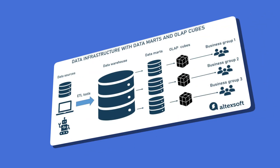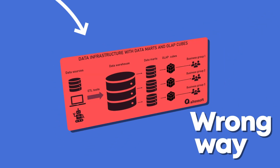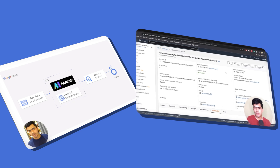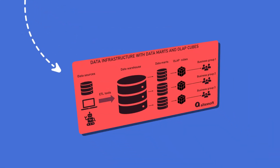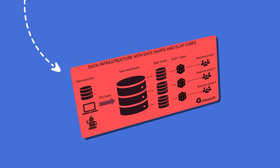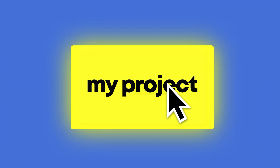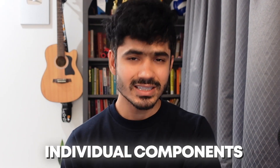The first mistake I made is that I was thinking about the data pipeline in the wrong way. When I started my career in data engineering, I would simply follow tutorials and build pipelines exactly as shown. I didn't understand the full picture — the purpose of building a data pipeline. I was focusing too much on the individual components rather than understanding the big picture behind building a data pipeline.